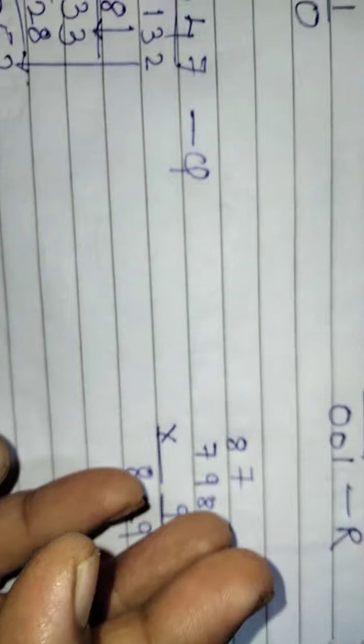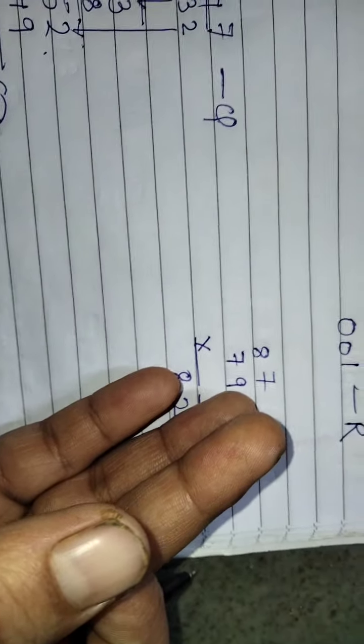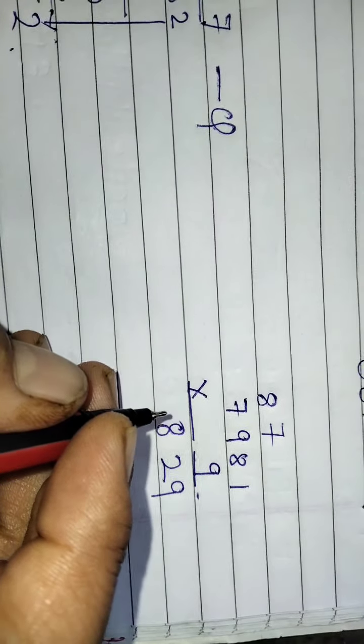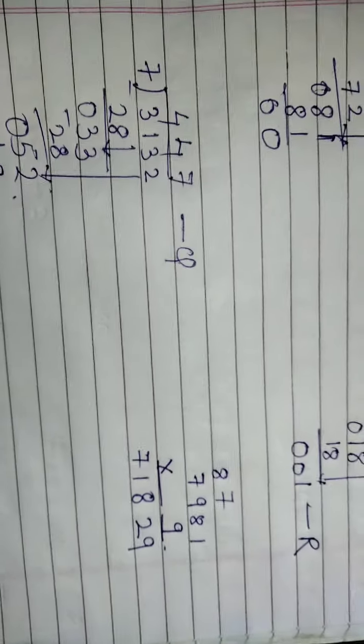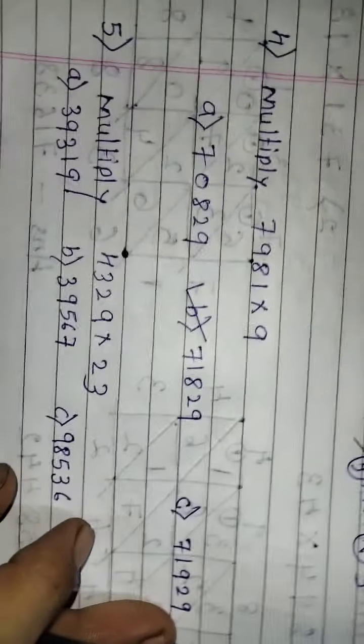63, then counting 64 through 71. 71829. The answer will be 71829. The answer will be 71829.